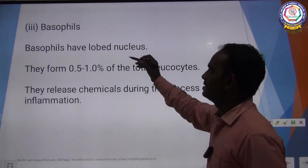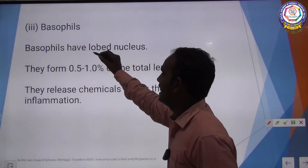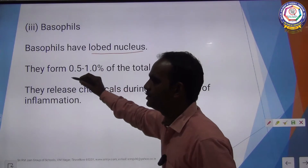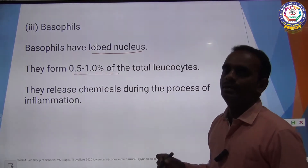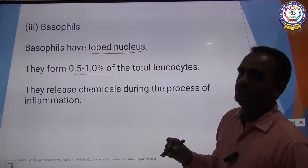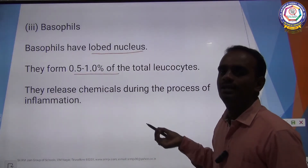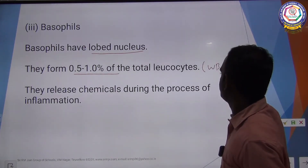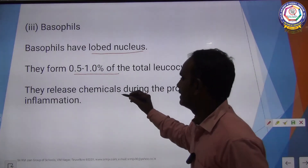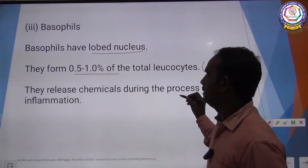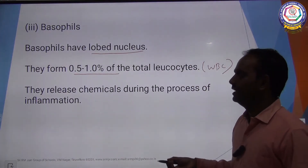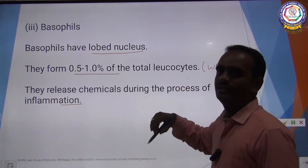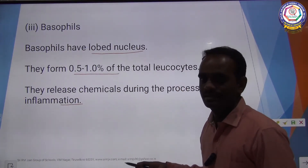Basophils have a lobed nucleus and constitute only 0.5 to 1% of total leukocytes. They release chemical substances during the process of inflammation.